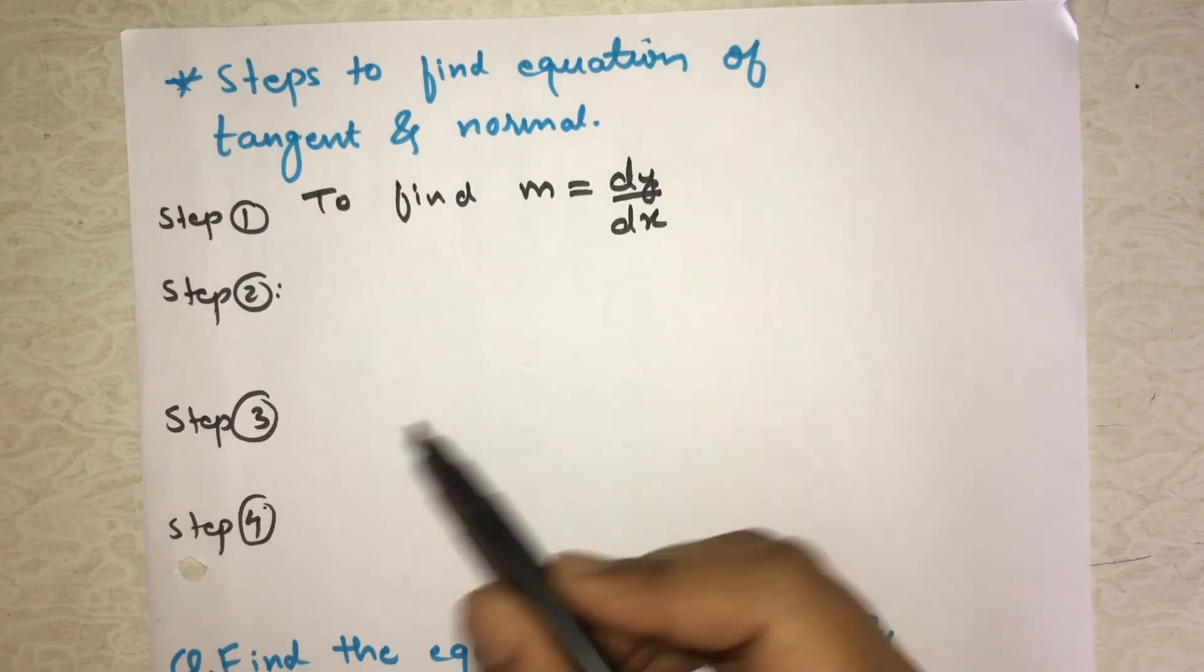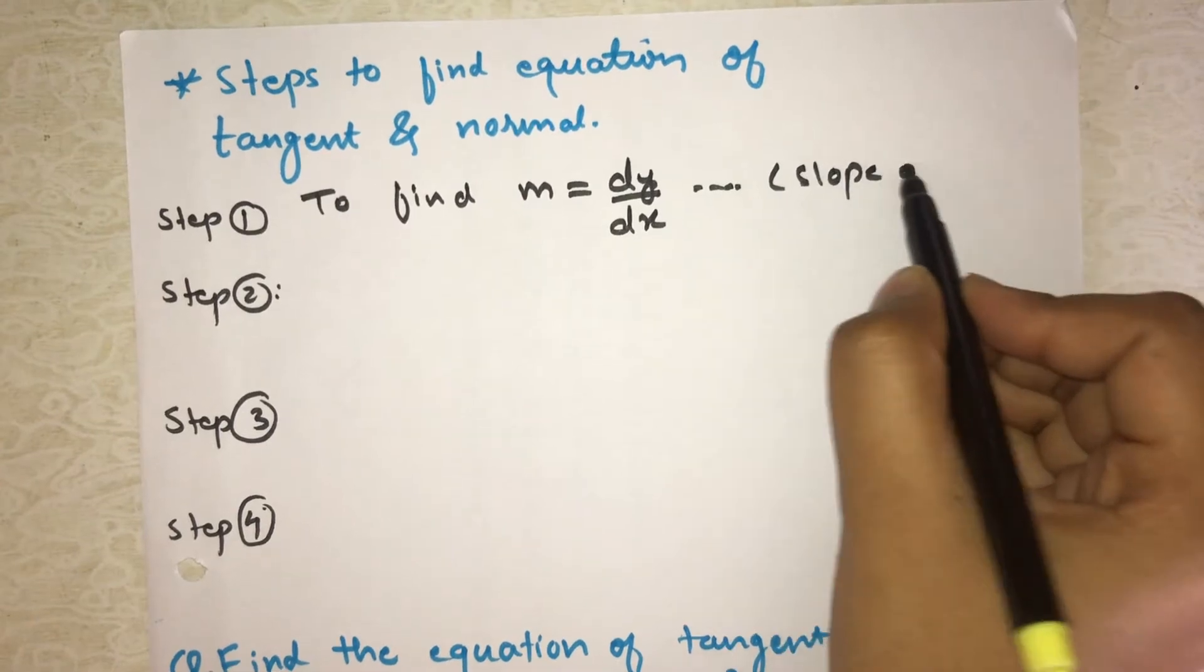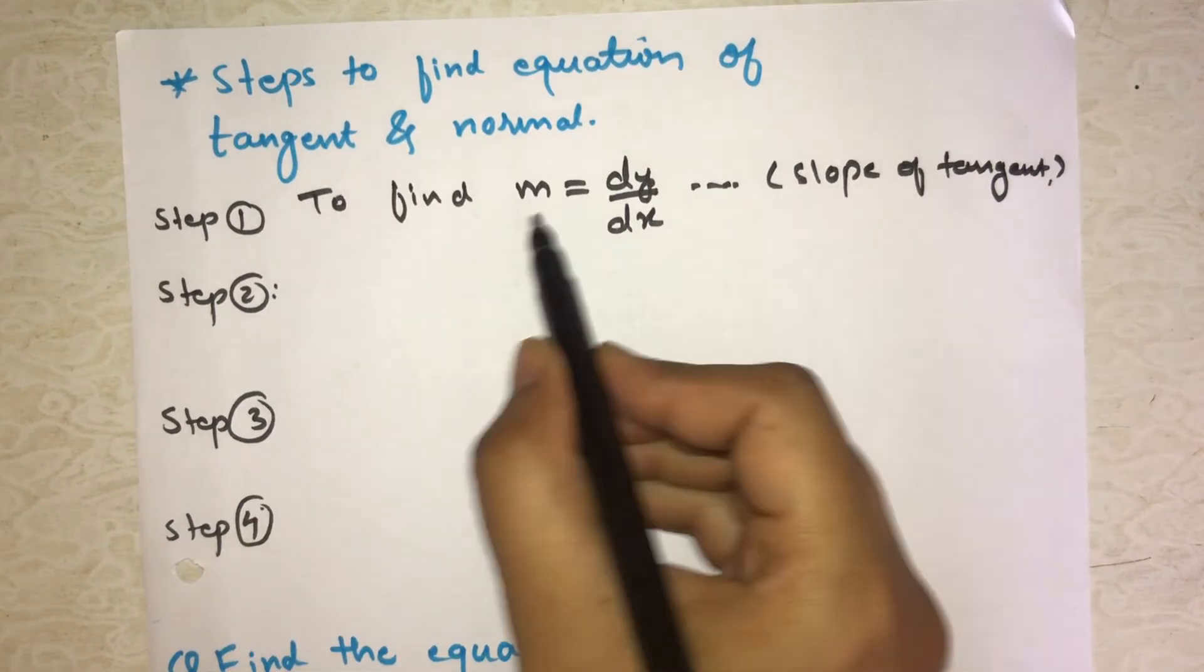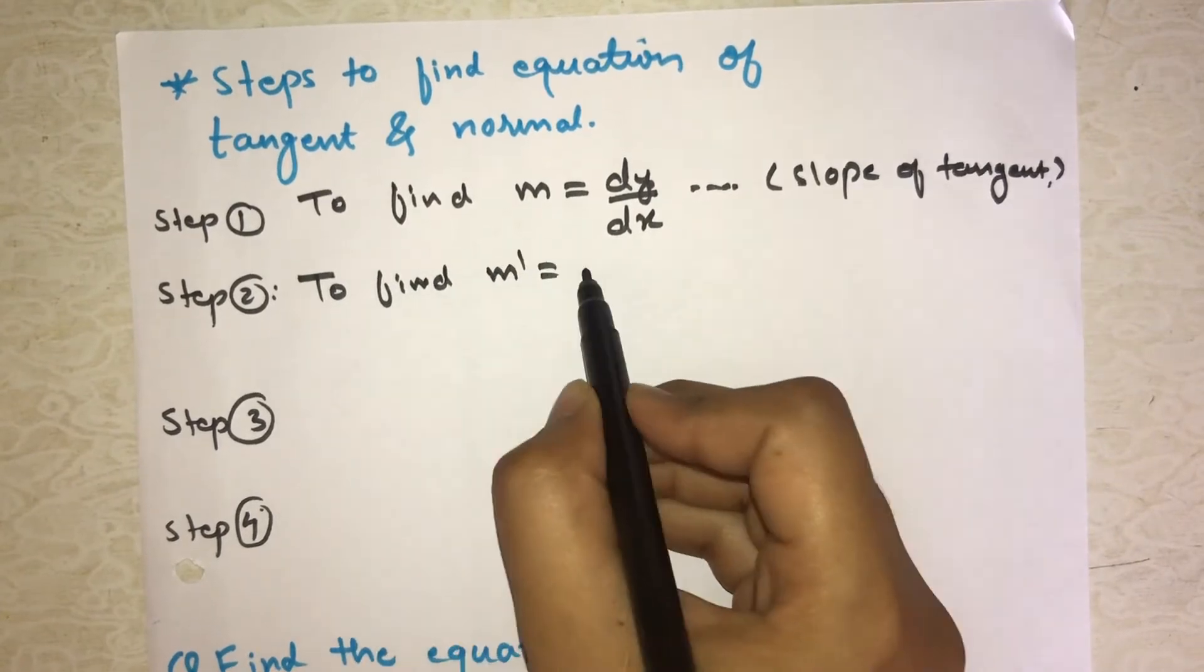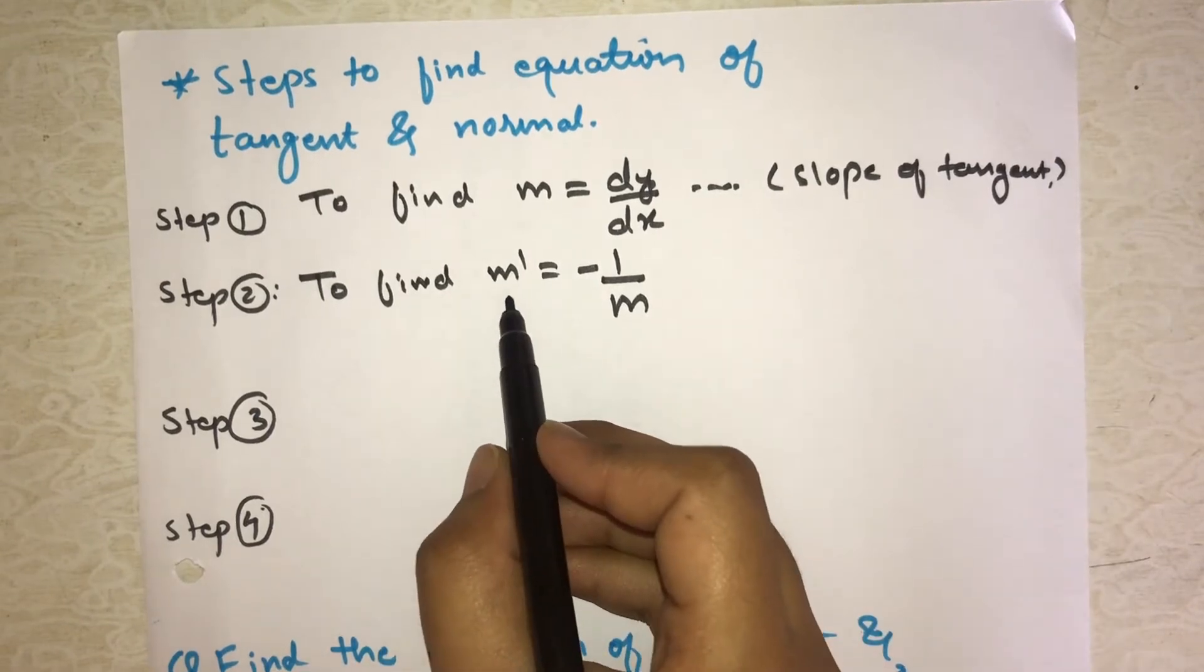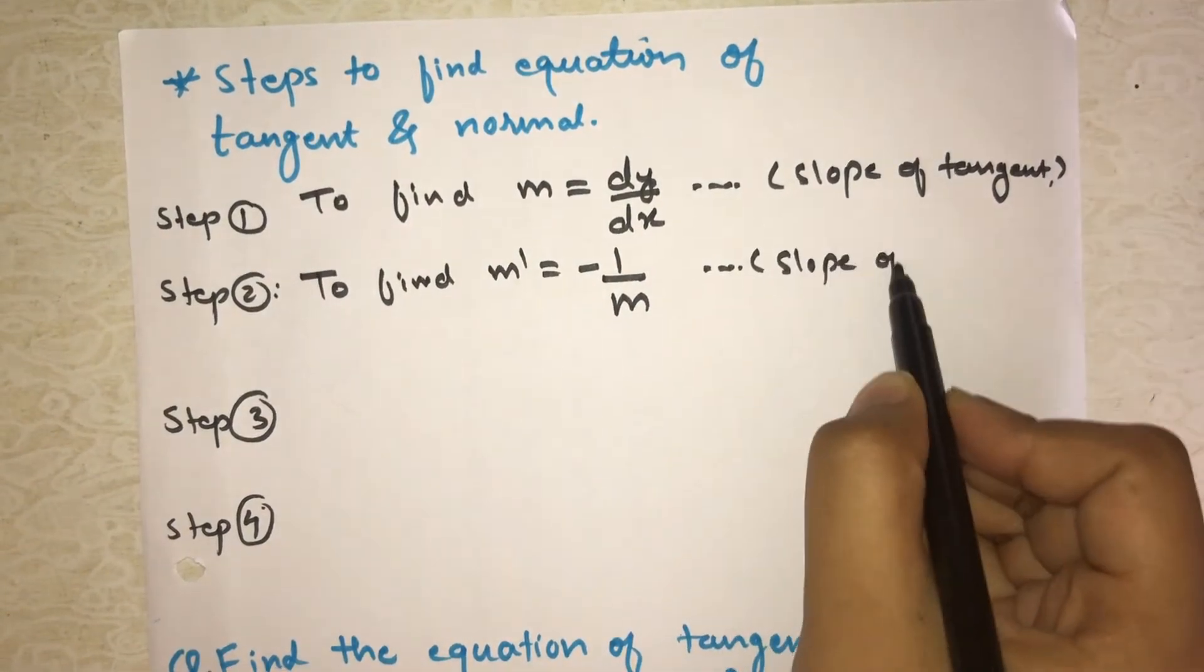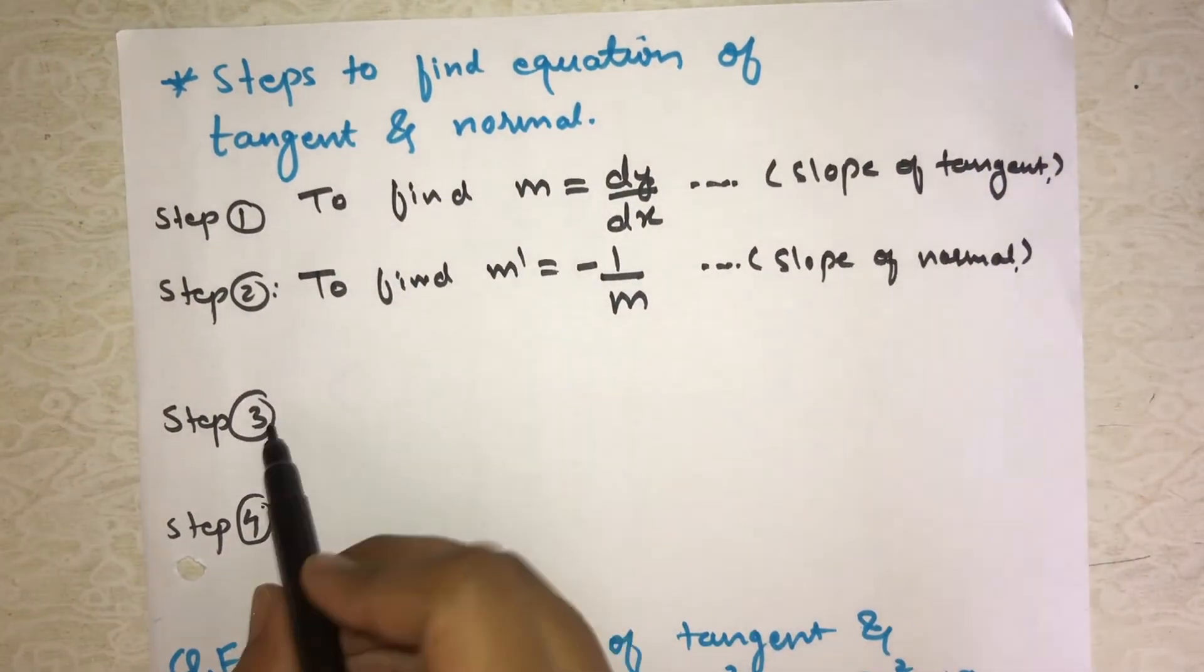Step two: remember, this m is the slope of tangent. Then step two, by using m we will find m dash which equals minus one upon m. So m dash is the slope of normal.